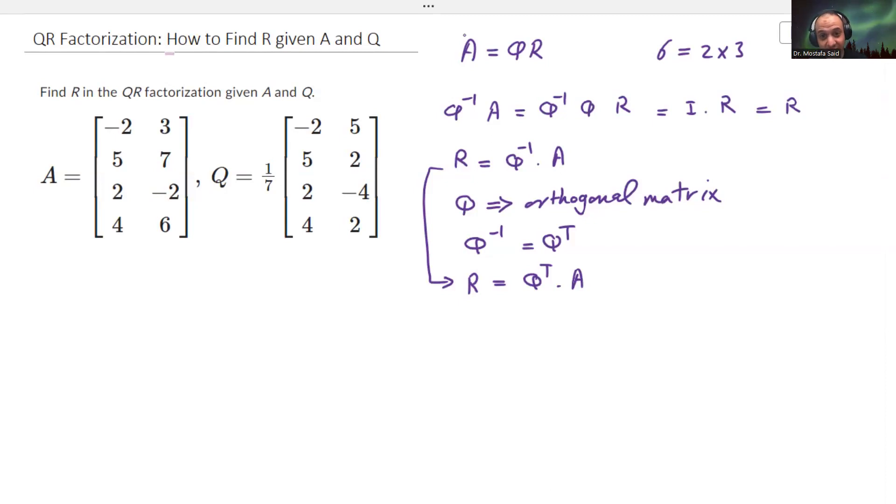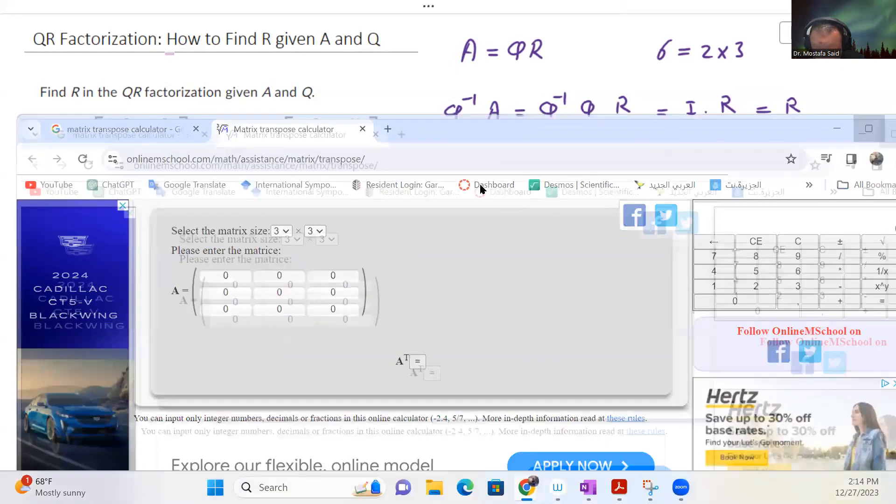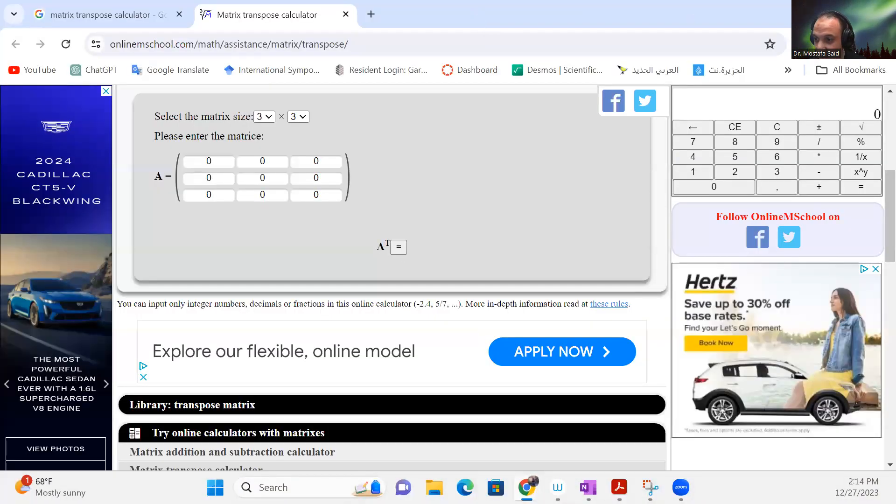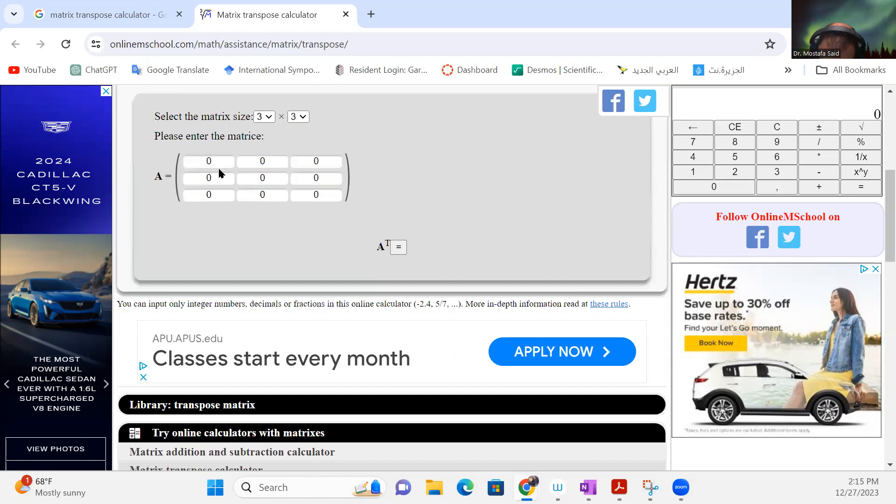Actually we're going to do this online to avoid any mistake. So I'm going to use a website to do this calculation for us. Let's start by finding the Q transpose. So yeah, transpose of matrix, that's good. So we have here 4 by 2.